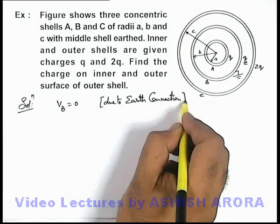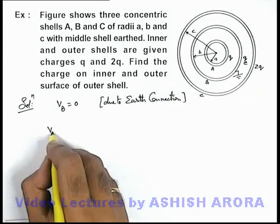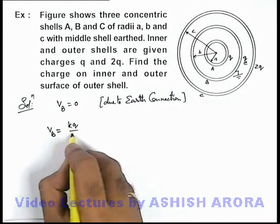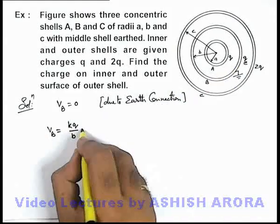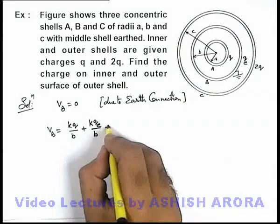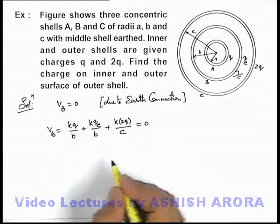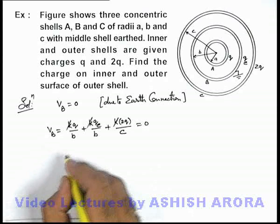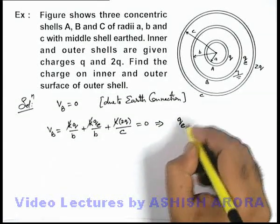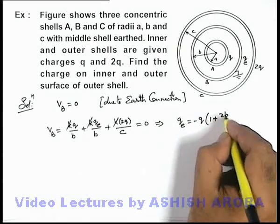This potential is due to all three charges. The potential of shell B due to the inner charge is kq/b, due to its own charge it is kqe/b, and due to the outer charge it is k × 2q/c, and this sum equals zero. Here k cancels out, and on simplifying we get the value of qe equal to −q(1 + 2b/c).